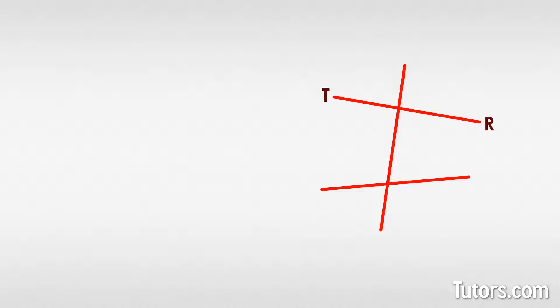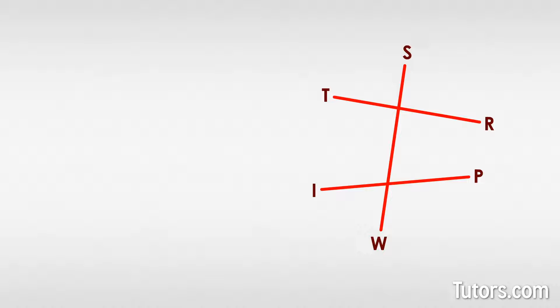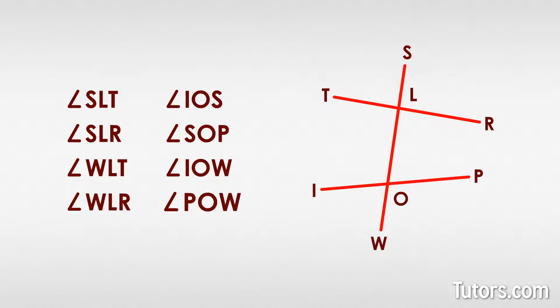Here are lines TR and IP, which would definitely cross somewhere in the distance. We cut across TR and IP with transversal SW, and where the transversal crosses TR and IP, we have points L and O. We can write each angle with three letters: angle SLT, angle SLR, and so on down to angle POW. We can also use numbers at these same vertices, so angle SLT is 1, angle SLR is 2, and so on, ending with angle POW as 8.